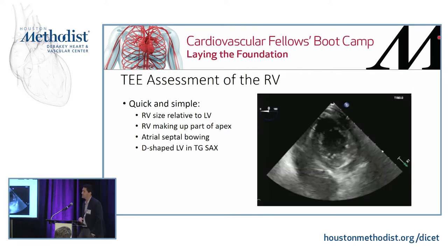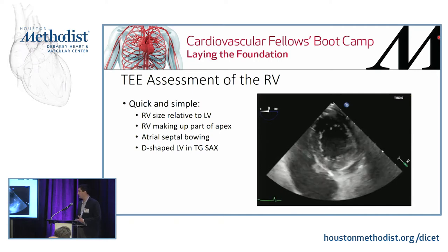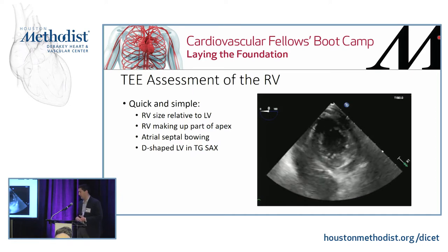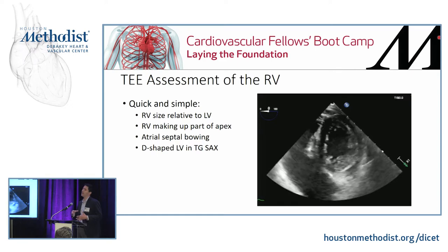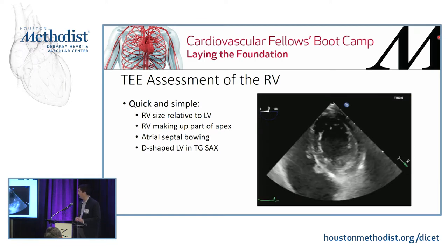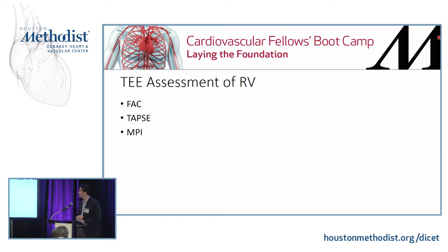Here's another quick and simple way to assess the RV in a transgastric short axis view. This is mainly a picture of the LV, but when there is pressure or volume overload of the RV, the LV takes the shape of the letter D — a D-shaped left ventricle. Conventional teaching is that a D-shape in diastole indicates volume overload, and in systole indicates pressure overload.